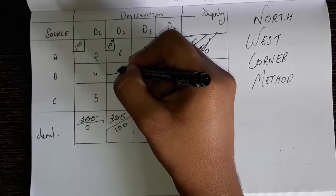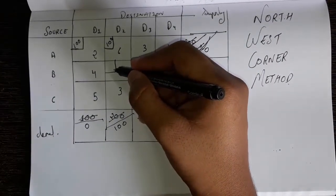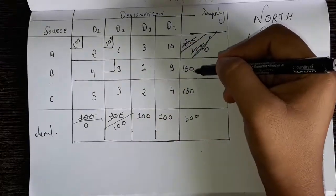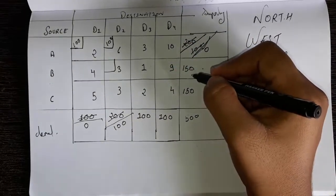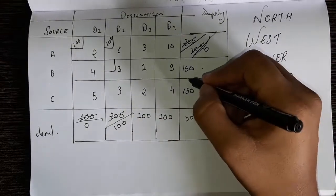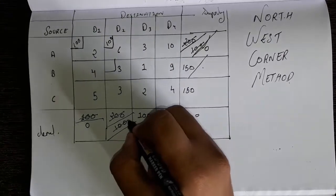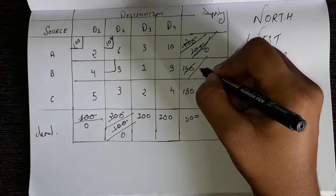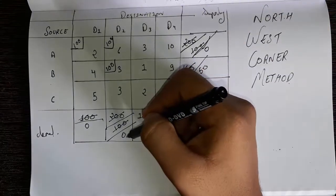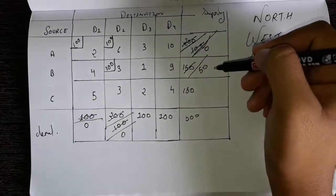Now we solve this in this corner. You have to see the supply and demand of this corner — the supply is 150, the demand is 100. So subtract 150 minus 100: this will become 0 and this will become 50, and the 100 will be written here. Now you can see this became 0, so we cannot go down and 50 is remaining, so we will go to the right side and draw the box.